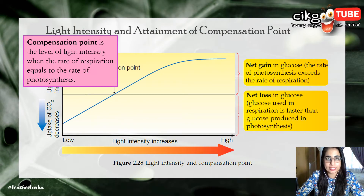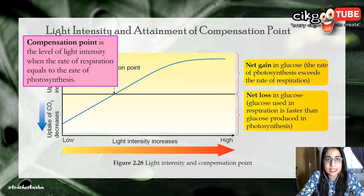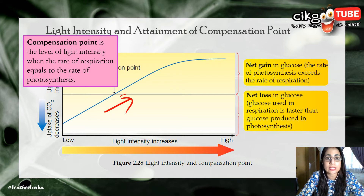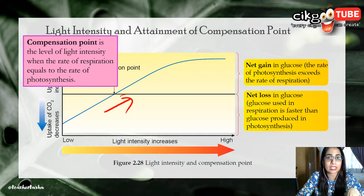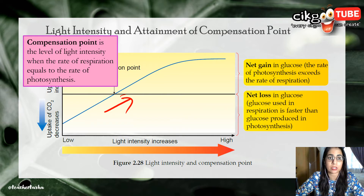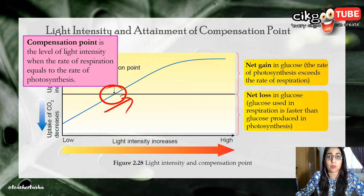At low light intensity, photosynthesis uses up carbon dioxide produced during respiration and releases oxygen needed for respiration. As light intensity increases during the day, the rate of photosynthesis also increases. Eventually a point is reached at which all the carbon dioxide produced during respiration is used in photosynthesis. At this point, there is no net gain or net loss of carbon dioxide by the plant, and no net gain or net loss of the sugar produced. The plant is said to reach the compensation point.